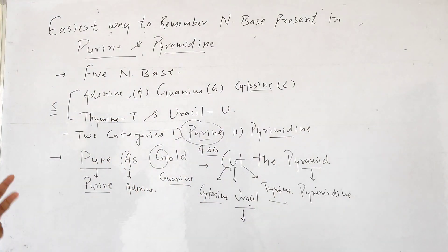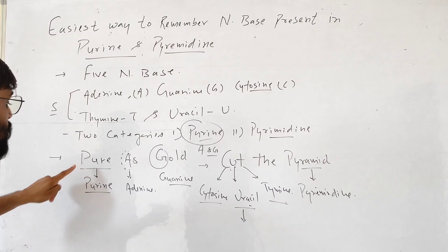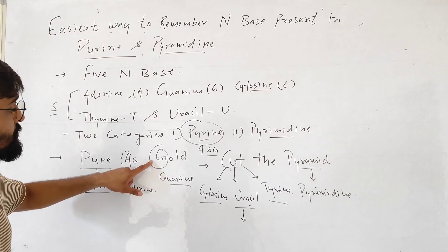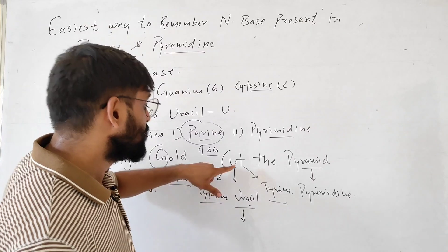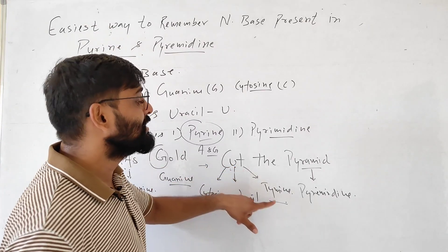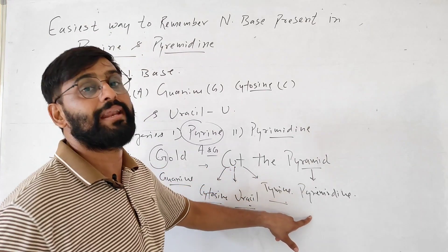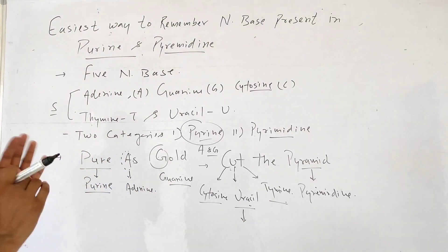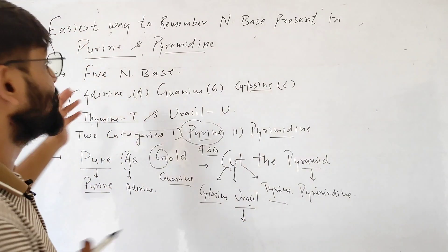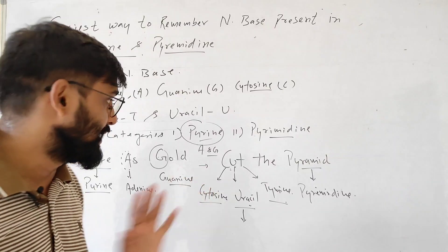So we will use 2 sentences. Pure as gold: pure (purine) has A (adenine) and G (guanine). Cut the pyramid: C (cytosine), U (uracil), T (thymine) are in pyrimidine. This is the easiest way to memorize which nitrogenous bases are present in purine and which are present in pyrimidine.